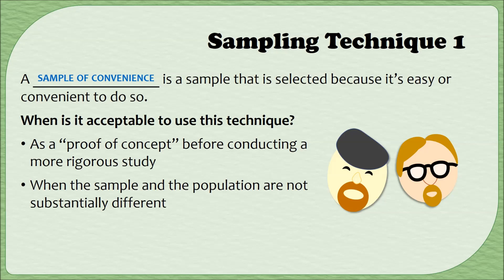The second time this technique is acceptable is when the sample and the population are not really that different. For example, if I want to learn about statistics students at Mohawk Valley Community College and I'm teaching three sections that semester, those students are not likely to be very different from all statistics students at MVCC. My sample is easy to access and representative. However, if I wanted to know about all students at MVCC, that would not be a good sample, since not all students take statistics.